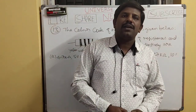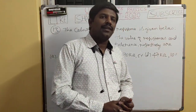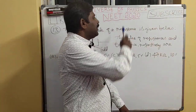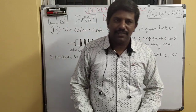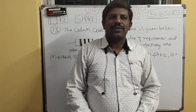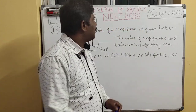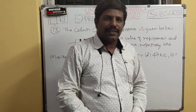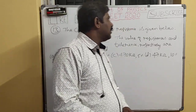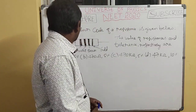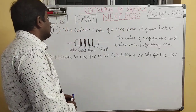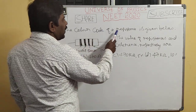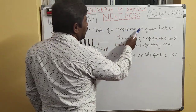Hi friends, welcome back to my channel Universe of Physics. I'm going to discuss one more question of NEET 2020 — question number 13, which is about the color code of a resistance.